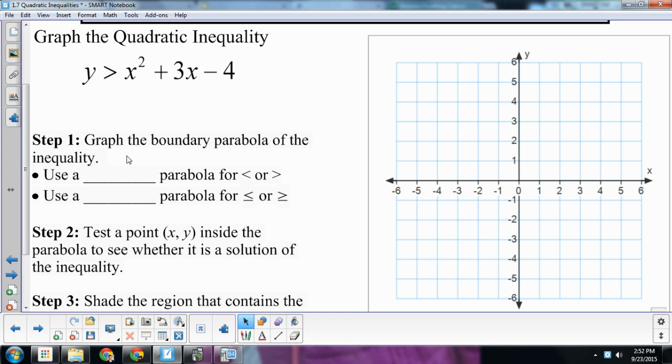Step one is to graph the boundary parabola of the inequality. For this, I imagine that there's an equal sign here, and I graph the parabola, whatever it would happen to be. I don't know what that is off the top of my head, but if I just had to guess, we'll say maybe it looks something like this. There's my boundary parabola.